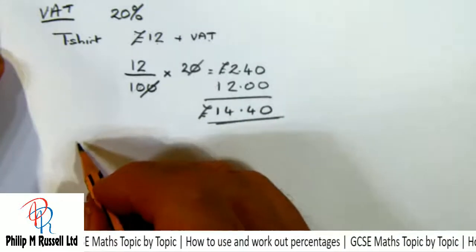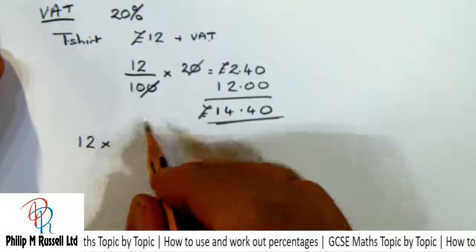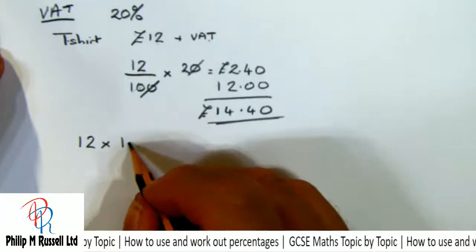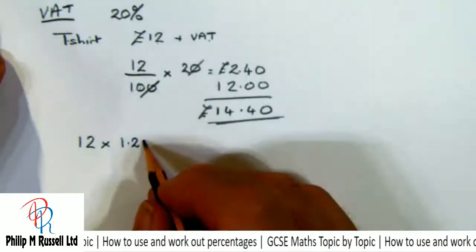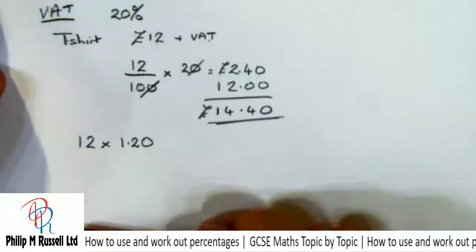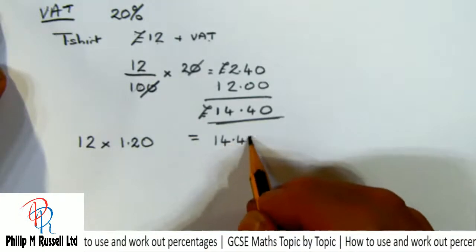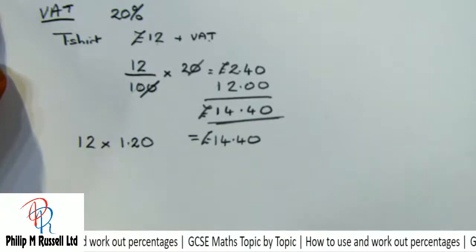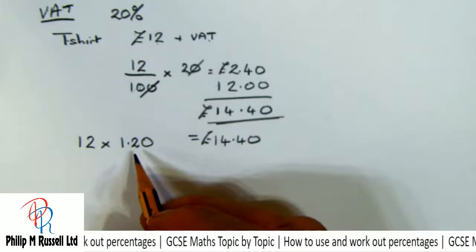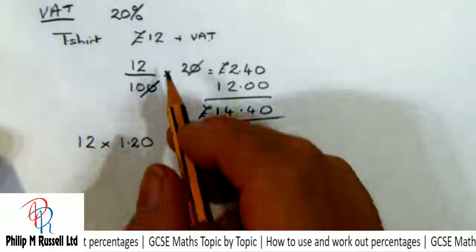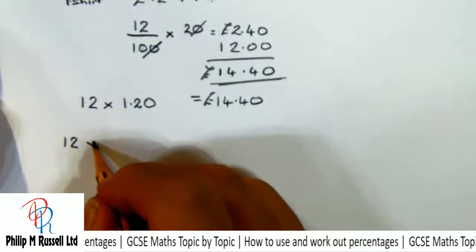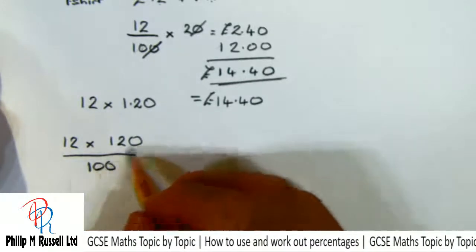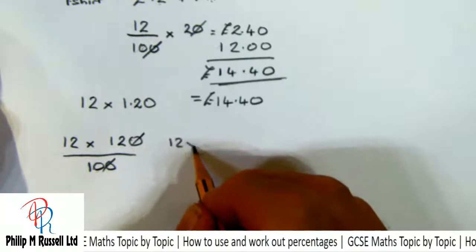There's an easier way: take £12 and multiply by a multiply factor of 1.20 — I don't need the zero — and that gives the same answer in one step. 12 times 1.2 = £14.40. This works because we're taking our £12, multiplying by 120% and dividing by 100, giving 12 × 1.2.